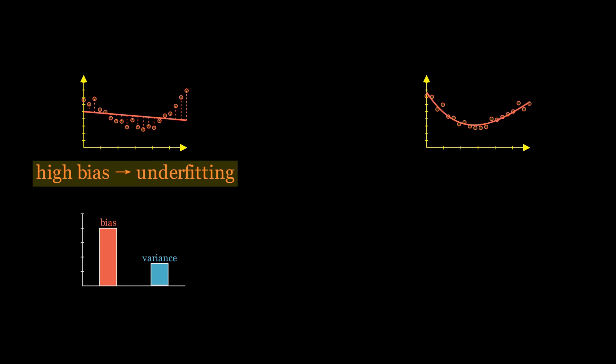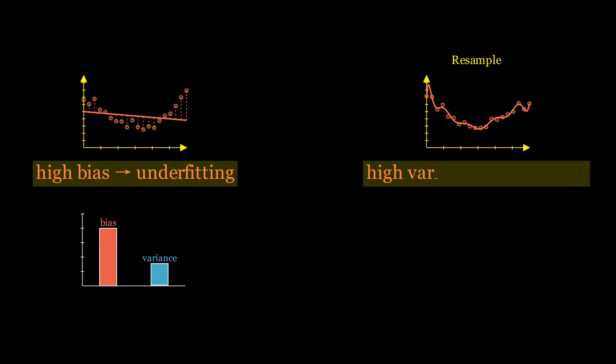Variance measures how much the model's predictions would change if we trained it on a different sample of the same size. High variance leads to overfitting. The model learns patterns that are just random noise in the training data, and those patterns disappear in new data.